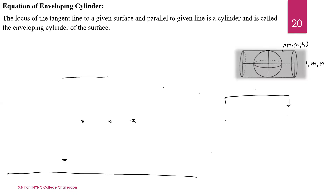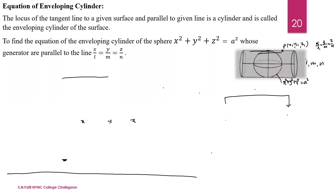Here we have the sphere whose equation is x² + y² + z² = a². These are the generator lines whose equation is x/l = y/m = z/l, and the direction ratios are l, m, n. To find the equation of the Enveloping Cylinder of the sphere x² + y² + z² = a², whose generators are parallel to the line x/l = y/m = z/n.